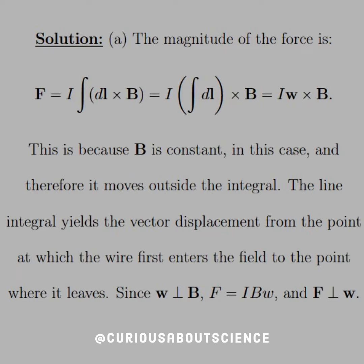We're left with the integral of dℓ, which is just W at that specific point. So then W cross B is all we need to worry about. Again, B is constant in this case, and therefore it moves outside the integral. The line integral yields the vector displacement from the point at which the wire first enters the field to the point where it leaves.